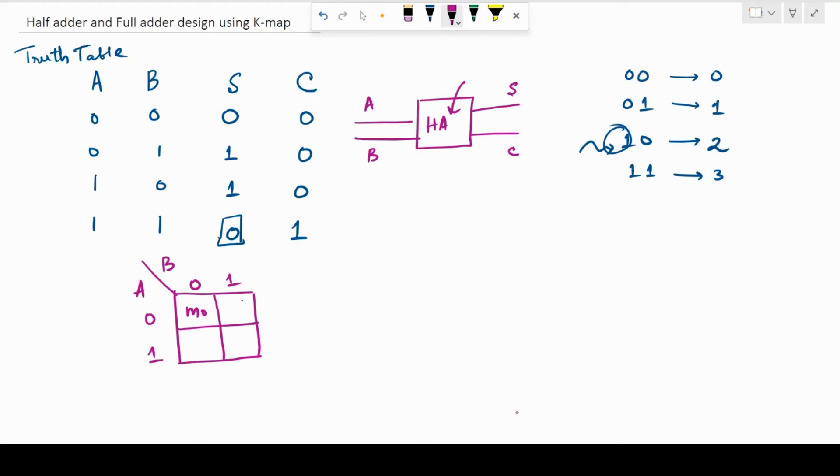1,0 represents minterm 2 and 1,1 represents minterm 3. So, each of these smaller squares represent the minterms.